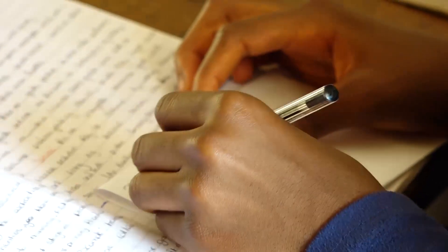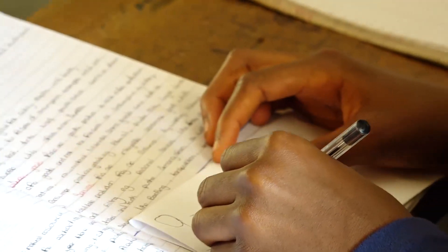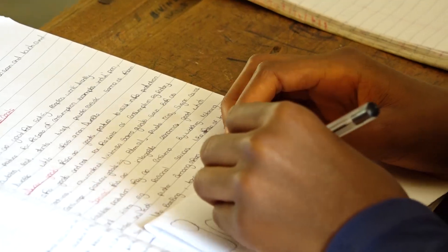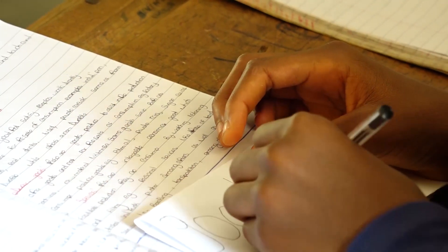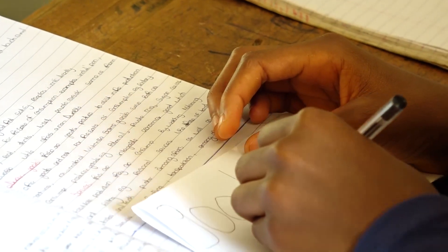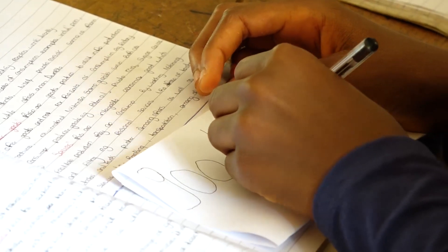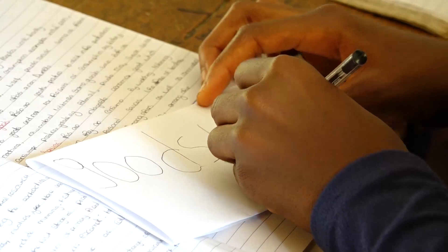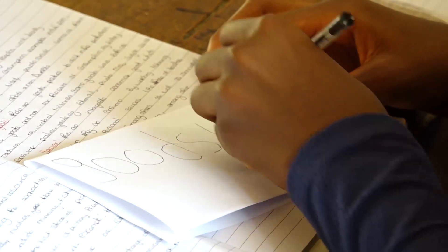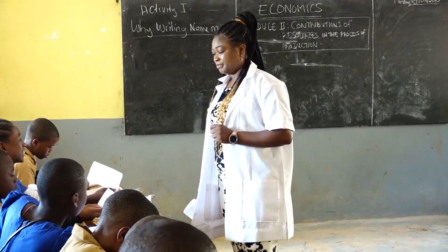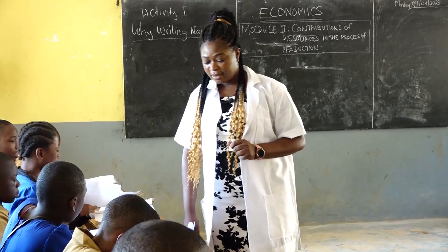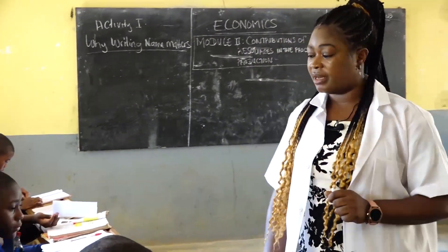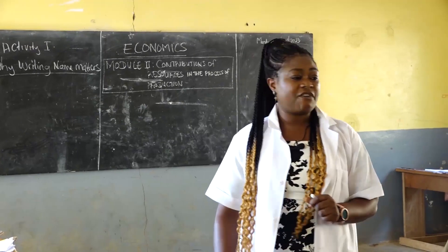Students write words about production with their left hands: sugar, rice, book, bag, benches, services, a pen, money, creation.